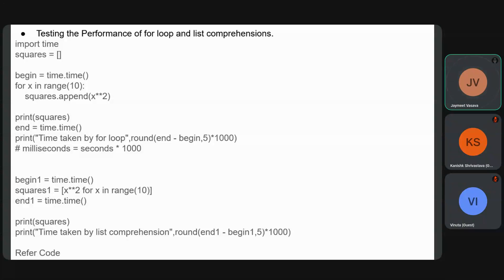Now we'll test the performance difference between a for loop and list comprehension. We'll use the 'time' module to time the execution of both programs. We create an empty list 'squares' using a for loop for range(10), and also create a list using list comprehension, then compare how both are executed and in what time.